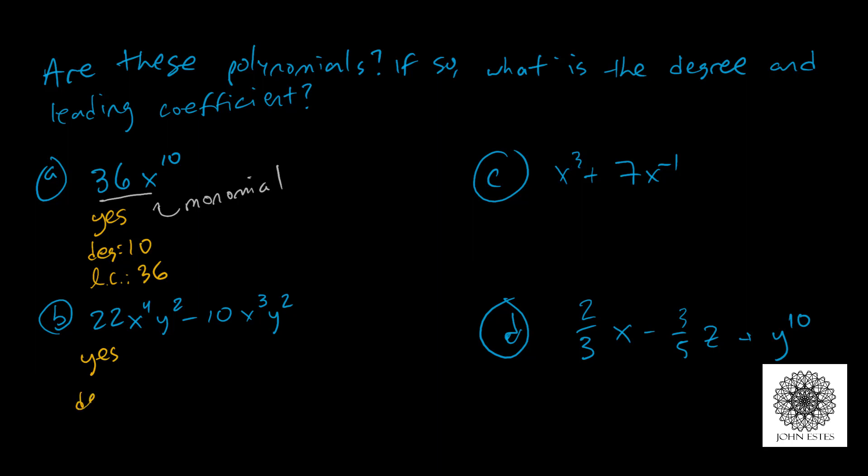To calculate the degrees here, this time we have to take each term and I need to add the exponents involved. So here I have 4 and 2, that gives me a degree 6 term. Secondly, I have 3 and 2, which gives me a degree 5 term. So my degree in this polynomial is 6, and my leading coefficient then would be 22.